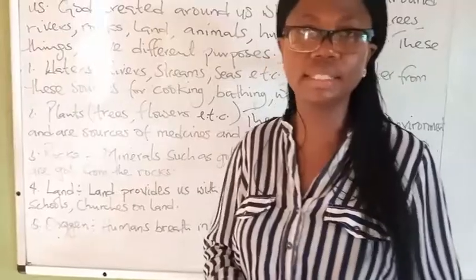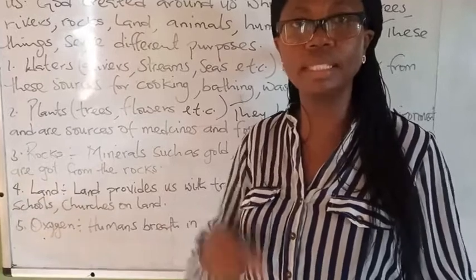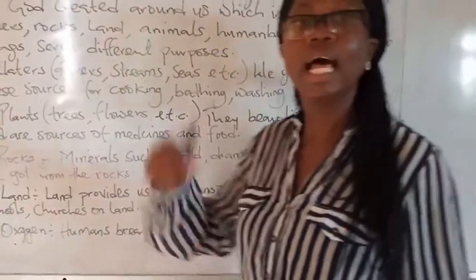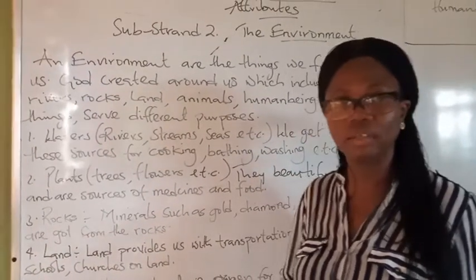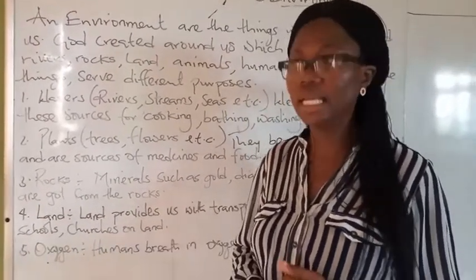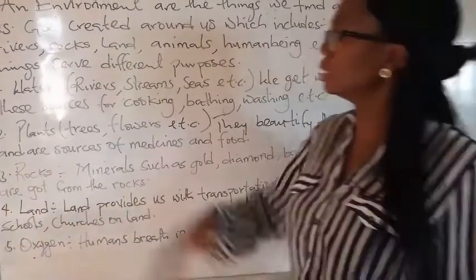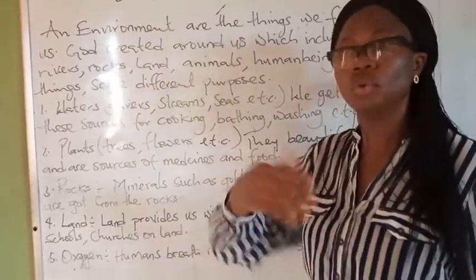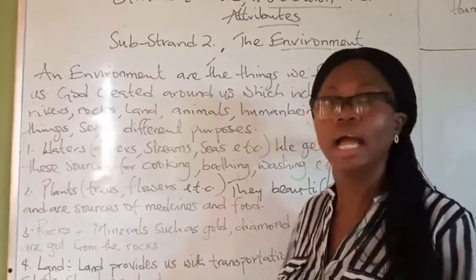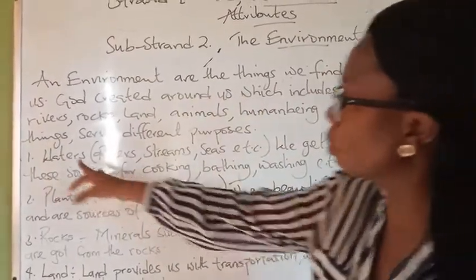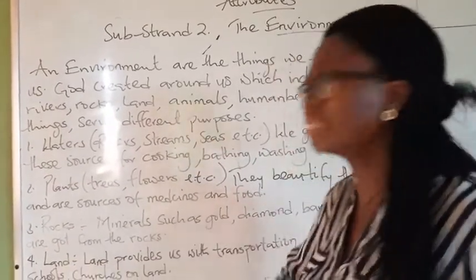We have oxygen. Though you can't see it, it is part of the environment — it makes up the environment. This oxygen is what keeps us alive. Human beings breathe in oxygen and breathe out carbon dioxide, like you know in your science, which keeps us living. We have so many things around us — not just these. I just mentioned a few, to direct you to understand what an environment is. The environment are the things you find around you, which includes waters, rivers, streams, seas, plants, rocks, land, oxygen, and so many more.